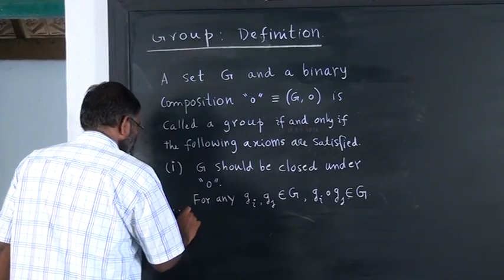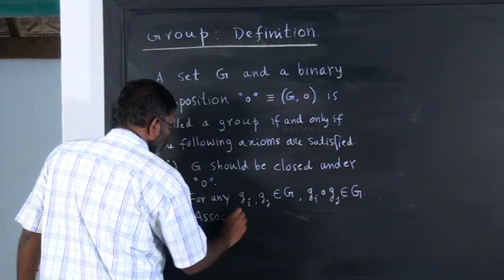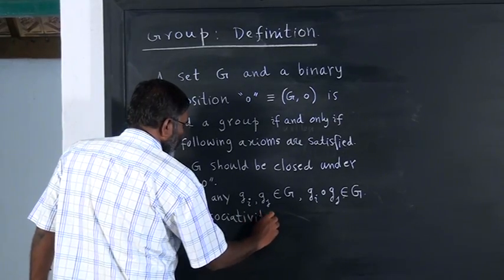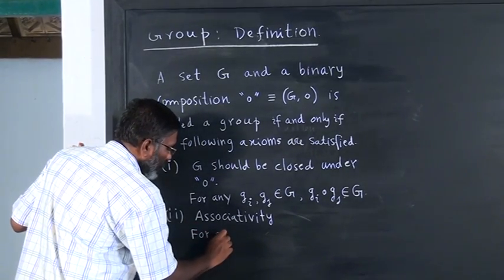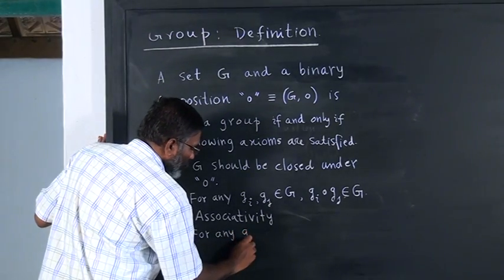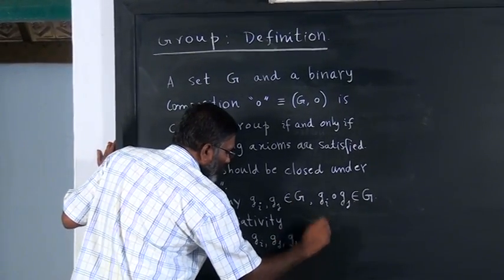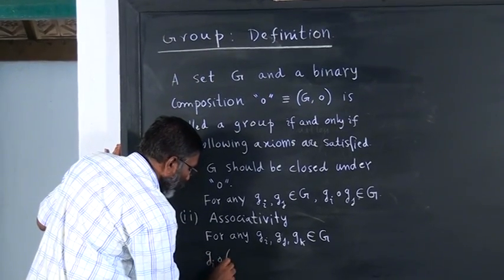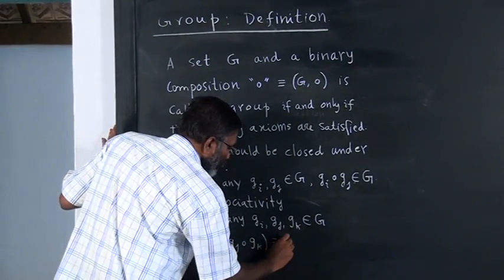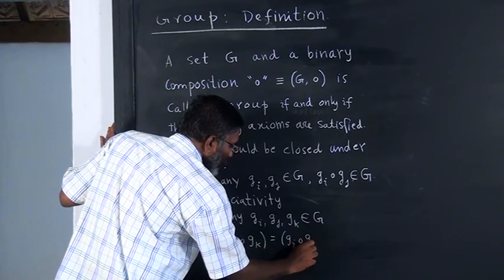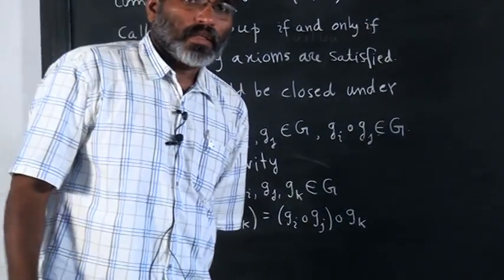The second property is called associativity. For any triplet of elements G_i, G_j, G_k in G, G_i composed with the result of (G_j ∘ G_k) is the same as (G_i ∘ G_j) composed with G_k. That means the order in which you compose them is not important. This is called associativity.